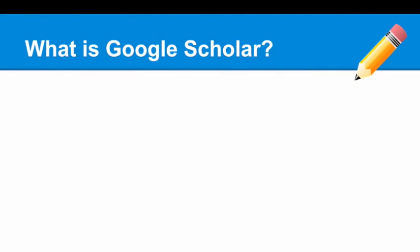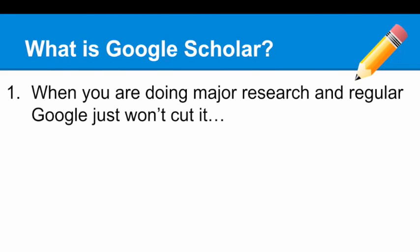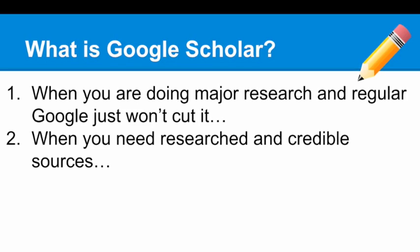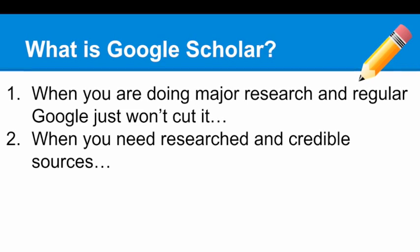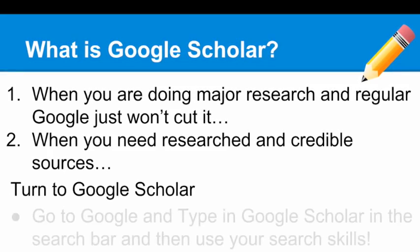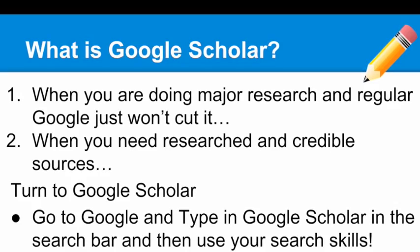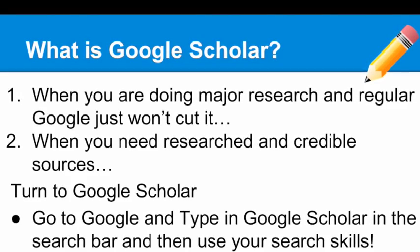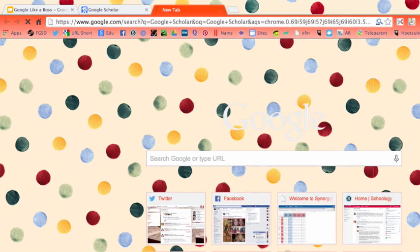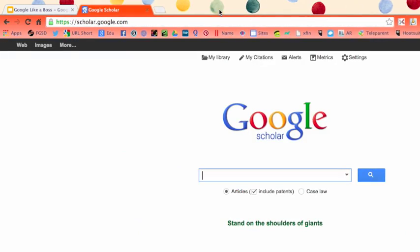Another thing to think about is something called Google Scholar. When you're doing major research and regular Google just won't cut it and you want to find really good scholarly articles, all you have to do is go into Google Scholar. On your main Google search bar, just type in Google Scholar and it will automatically change you over to a completely different browser. This allows you to look for specific articles and things that have been researched and are credible.